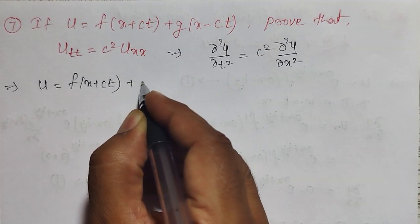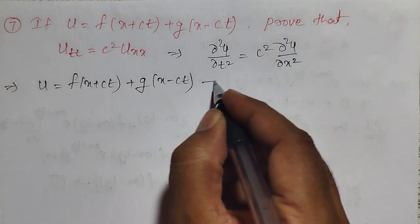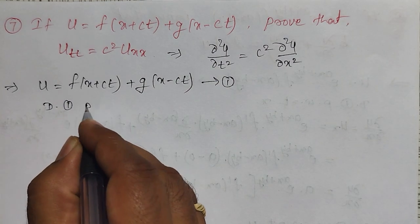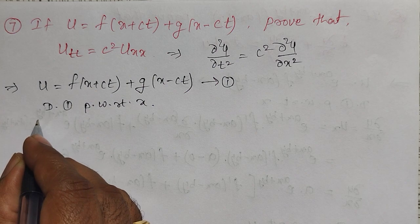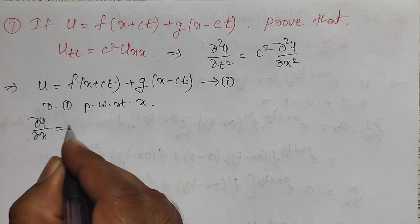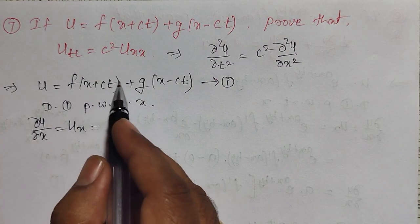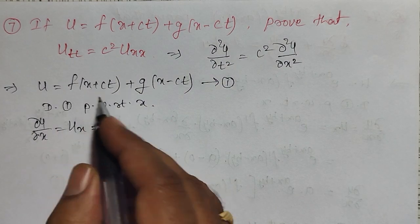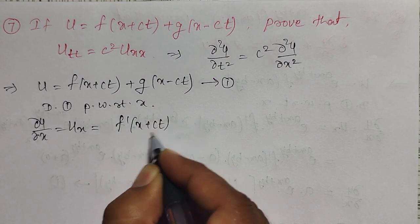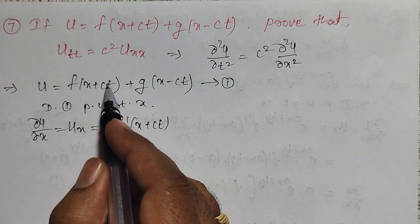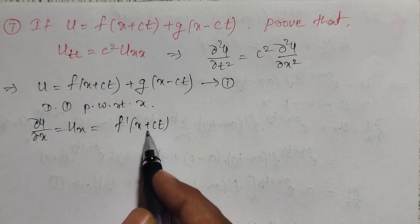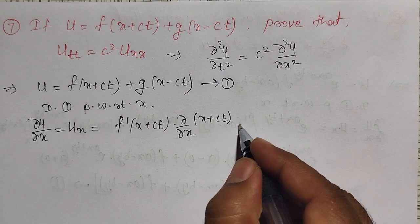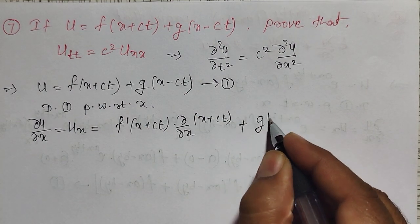Let u = f(x + ct) + g(x - ct), call this equation number one. Differentiating partially with respect to x: ∂u/∂x, or u_x. Since it is a sum of terms, the sum rule applies. Each term is treated as one function, so the derivative of f(x + ct) is f′(x + ct) times ∂/∂x of (x + ct), applying the chain rule. Similarly for the second term: g′(x - ct) times ∂/∂x of (x - ct).